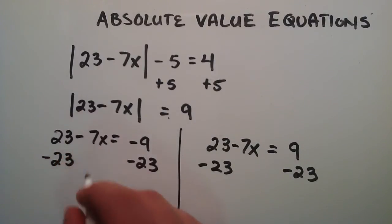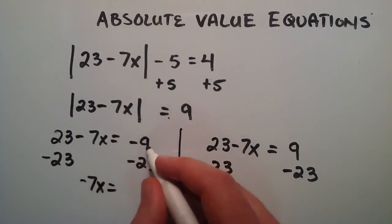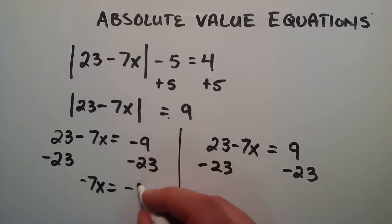So we're left with the negative 7x on the left hand side here. And then that's equal to negative 9 minus 23 is a negative 32.